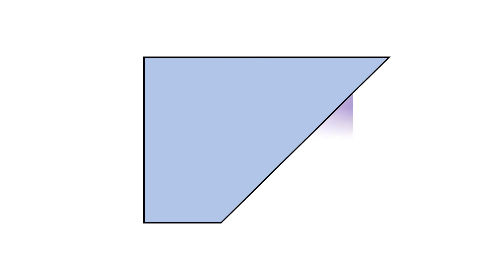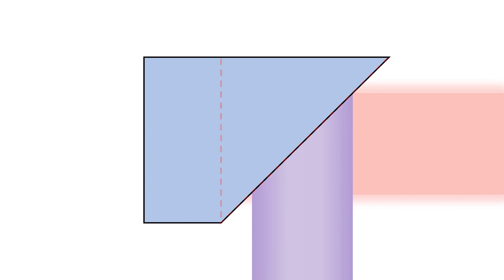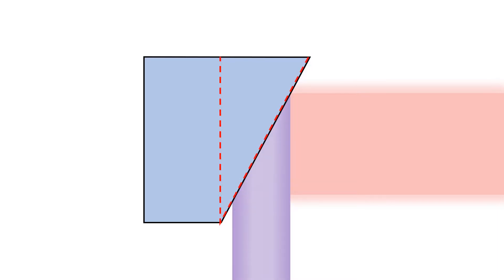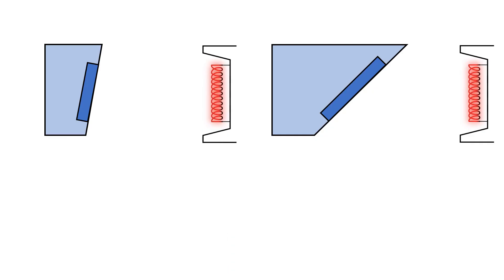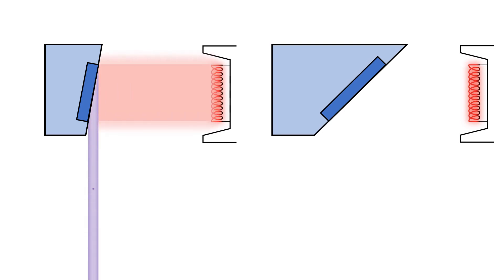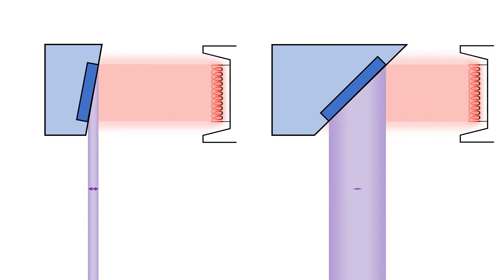How else can we change the effective focal spot other than changing the size of the incident electron beam? This is where the line focus principle comes in. By altering the angle of the anode, we can alter the size of the effective focal spot. Let's see what happens when we go from a 45 degree angle to something like a 20 degree angle. On the left is an x-ray tube using a small anode angle and on the right is an x-ray tube using a large anode angle. Notice how the width of the effective focal spot changes when using a small anode angle versus the large anode angle.